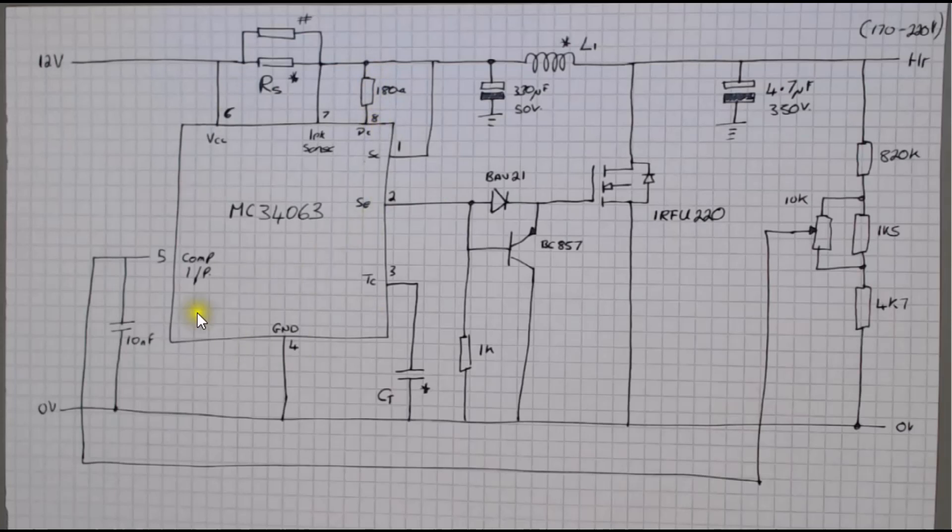The timing of this circuit IC is controlled by the capacitor CT and it's got a little star against it, asterisk, so we'll calculate that. That value has to be calculated later.